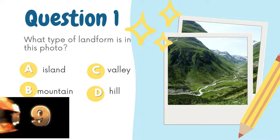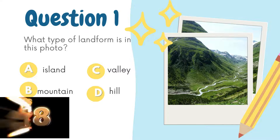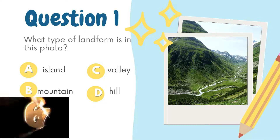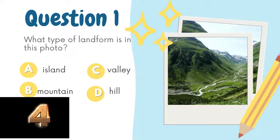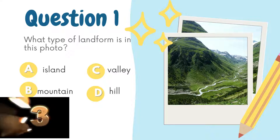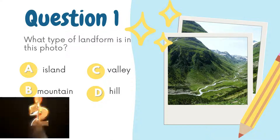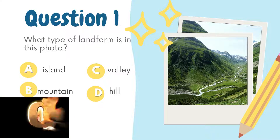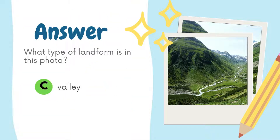What type of landform is in this photo? Option A: Island. Option B: Mountain. Option C: Valley. Option D: Hill. The correct answer is Option C: Valley.